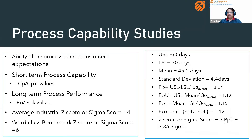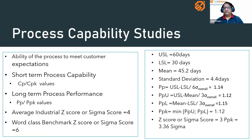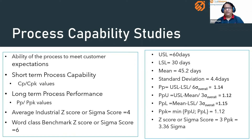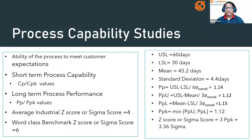The Z-score is three times the PPK value, so it becomes 3.36 — that is the process sigma level. The average industrial Z-score is 4, so our process is not capable because it has to be at least four sigma to be considered capable. Since the order fulfillment process is at 3.36 sigma, the process is not able to meet customer expectations and is therefore not capable.